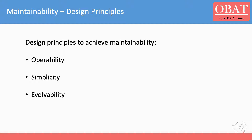Operability is making it easy for the operations team to keep the system running smoothly. Simplicity means making it easy for new engineers to understand the system by removing as much complexity as possible. Evolvability means making it easy for engineers to make changes to the system in the future, adapting it for unanticipated use cases and requirements. It is also known as extensibility, modifiability, or plasticity.